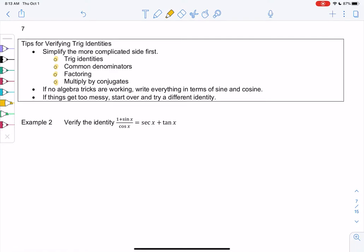If none of this works, try to write everything in terms of sine and cosine. If it turns into an absolute mess, maybe you chose the wrong identity. I really recommend just stopping and starting over. This is an identity, saying this is true for any x. We're just going to prove that it is true.